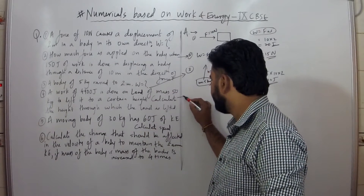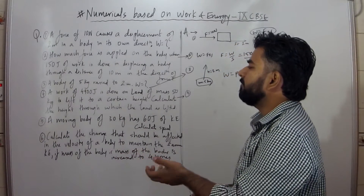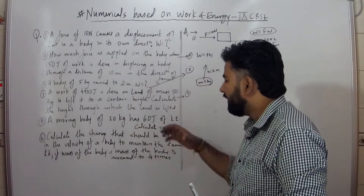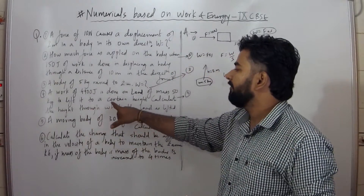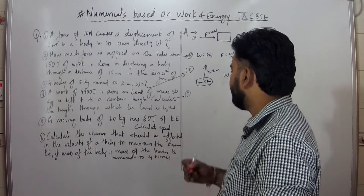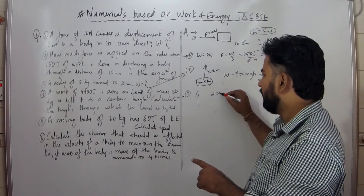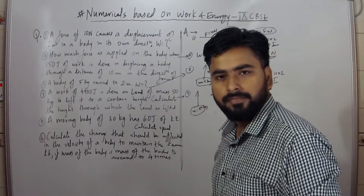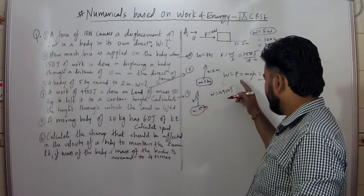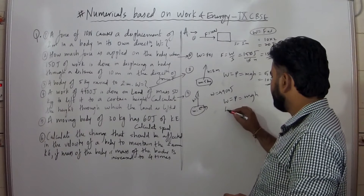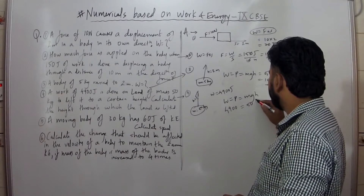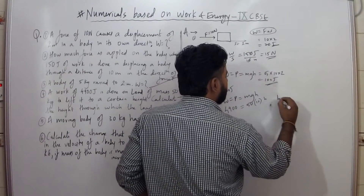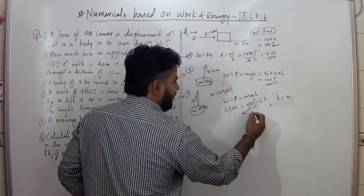Next, the fourth question: a work of 4900 joules is done on a load of mass 50kg to lift it to a certain height. Using work equal to mgh, we have 4900 equal to m (50) times g times h. So h will be equal to 4900 divided by 50 and g.